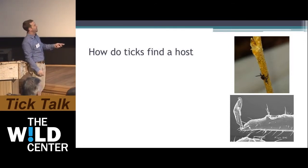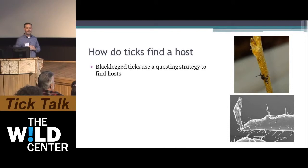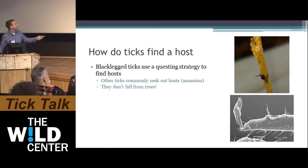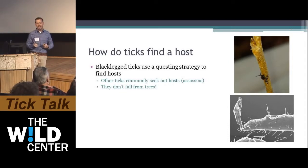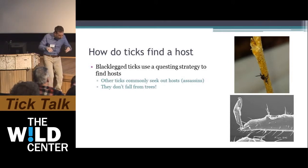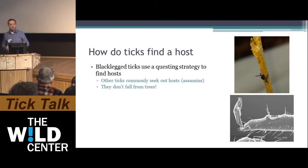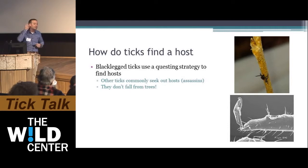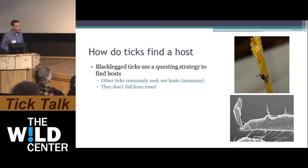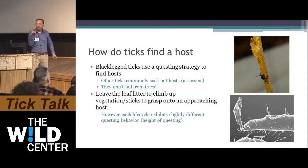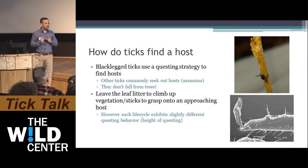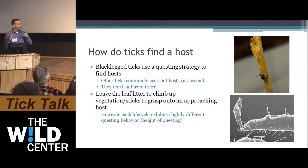How do ticks find a host? Black-legged ticks use a questing strategy — they climb up branches and latch onto you as you walk by. Other ticks use an assassin or hunter strategy, actually climbing up your shoe. Ticks do not fall from trees; they get to your head because they've climbed your entire body. Each life stage quests at a different height: larvae stay in the leaf litter, nymphs climb a little higher, and adults climb the furthest, which affects what animals each stage feeds on.